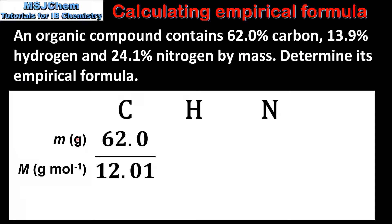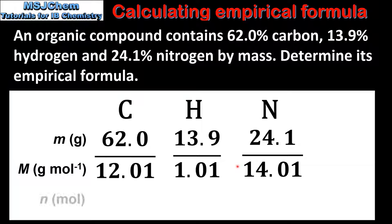The second step is to convert from mass in grams to amount in moles. To do this we'll divide the mass in grams by the molar mass. So for carbon it's 62 grams divided by 12.01. For hydrogen it's 13.9 grams divided by 1.01. And for nitrogen it's 24.1 grams divided by 14.01.